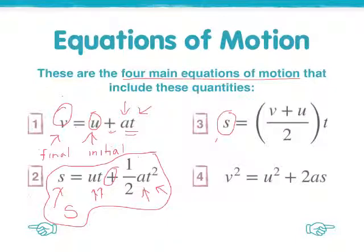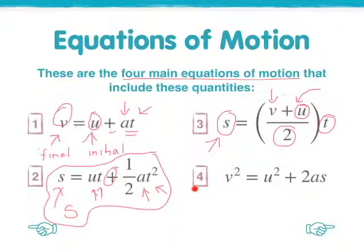Equation number 3, s, displacement, is equal to final velocity plus initial velocity divided by 2 times t. And the last equation, 4, is final velocity squared equals initial velocity squared plus 2 times acceleration times displacement.